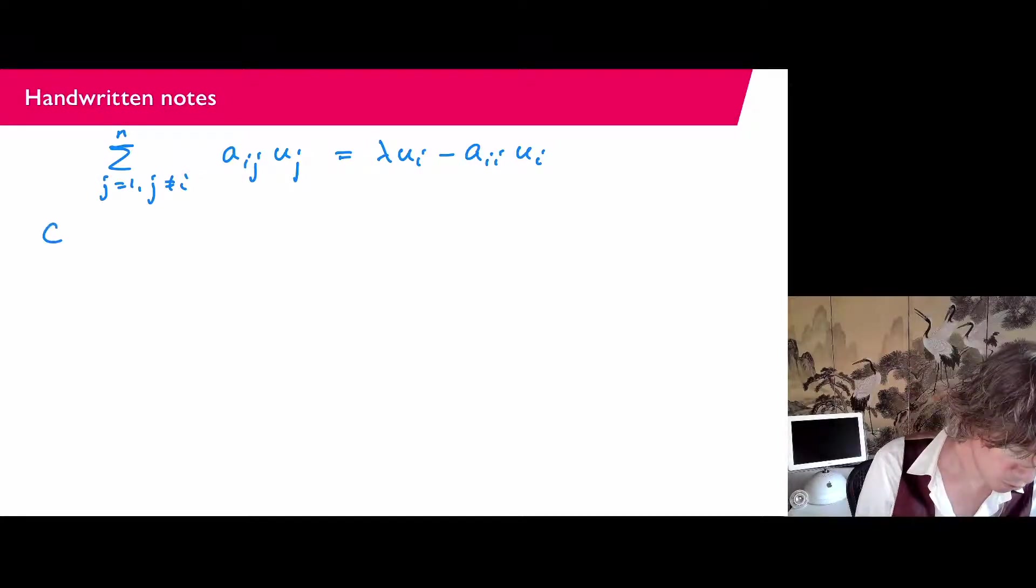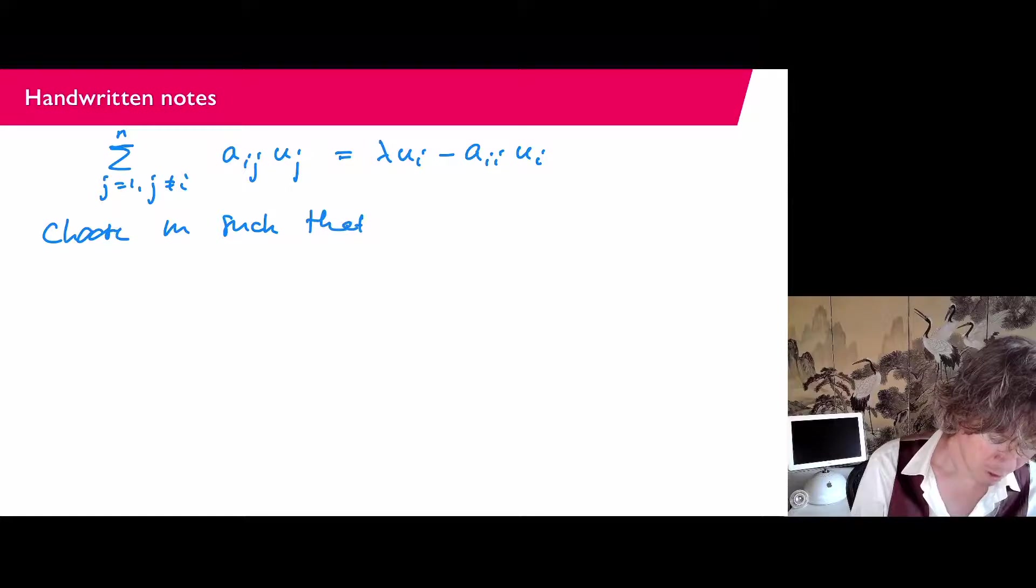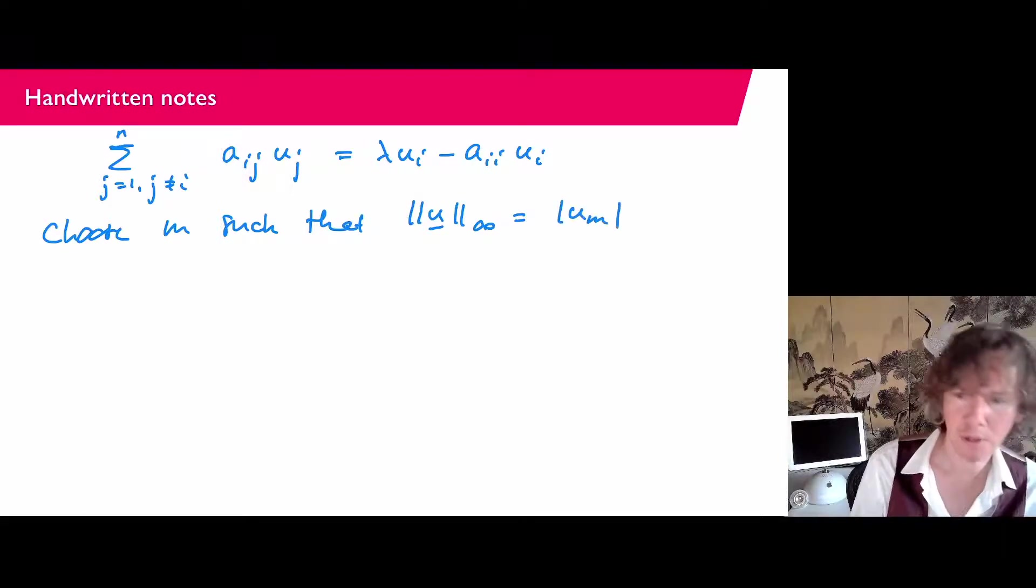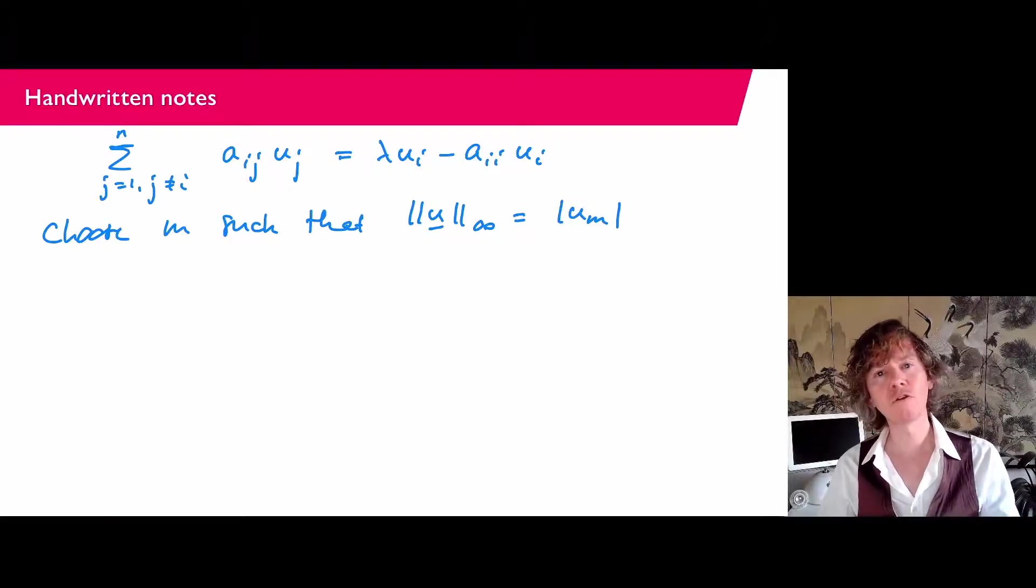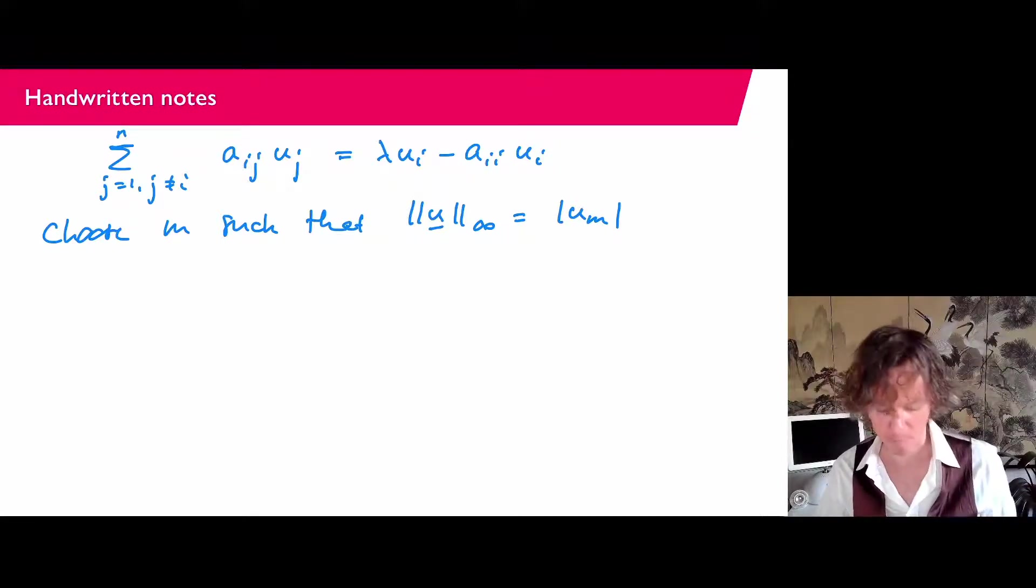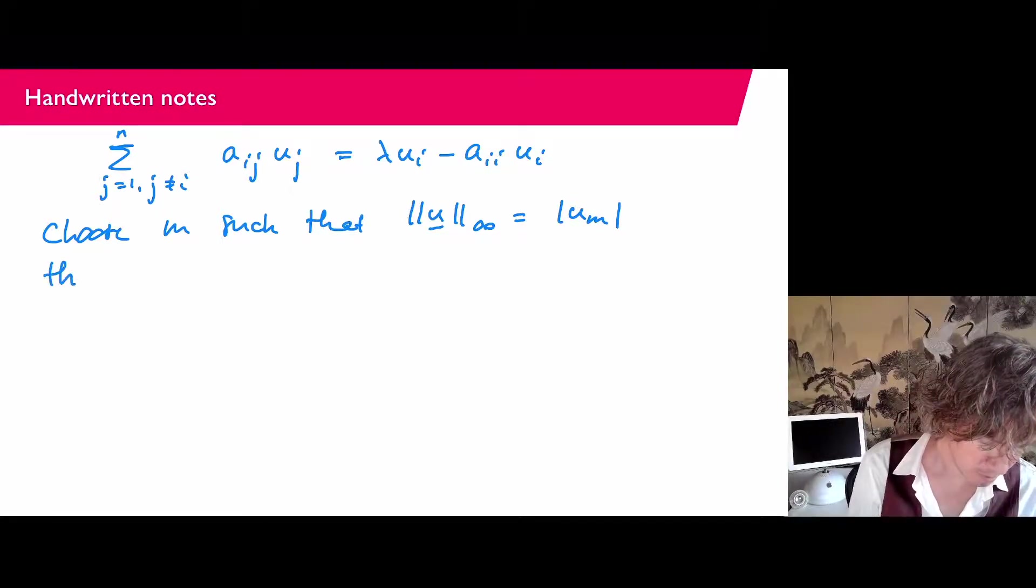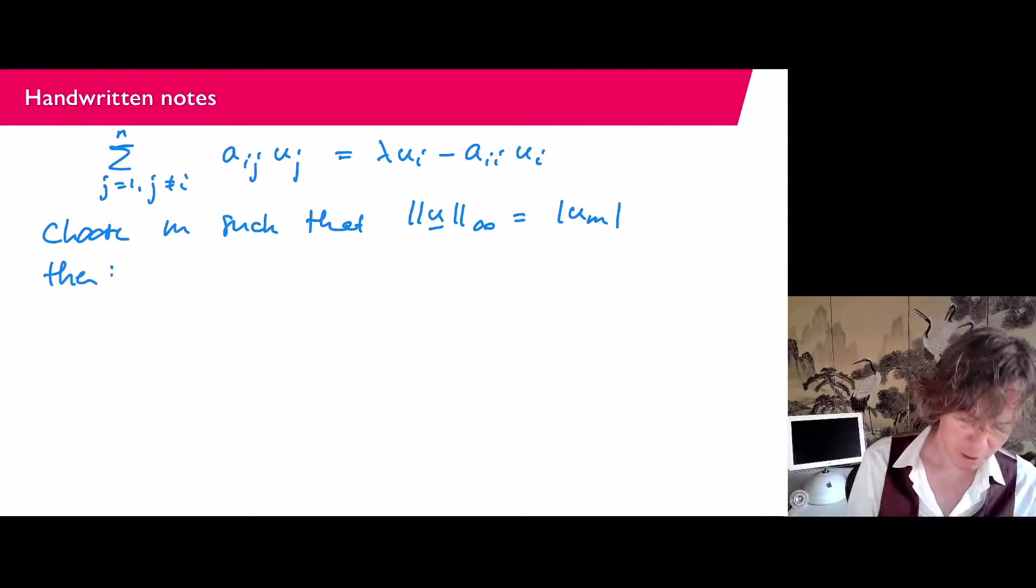So I'm going to choose M such that if I take the infinity norm of U, that equals U_M absolute value. So as you know, the infinity norm is if you take all the components of the vector then absolute values and then the biggest one. So I can find such an M.